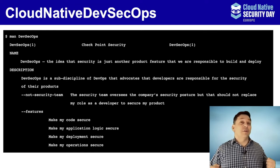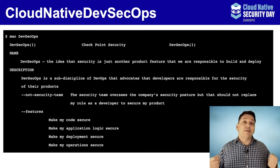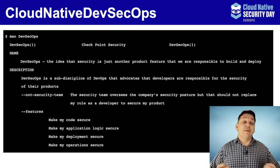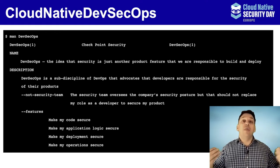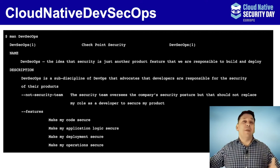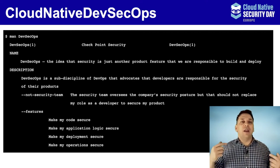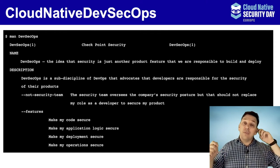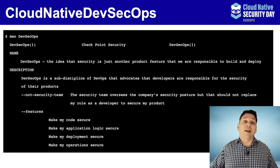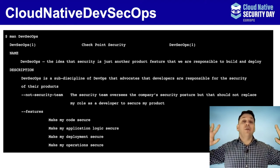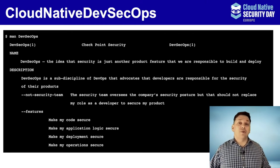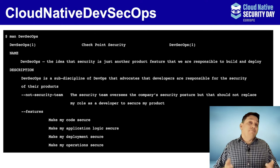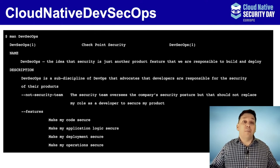DevSecOps — and really I'd like to just call it DevOps — is just saying security is yet another part of the functional and non-functional requirements for our application. That means we as developers are responsible for deploying and operating secure applications. Once you own that, once you say it's my problem and not somebody else's, that changes a lot about what you feel you have to solve. Security teams are still there to help you, to provide guidance and tools, and to look at the overall security posture of the organization. But when it comes to product and application security, that's you — it's part of your application and you're responsible for it.